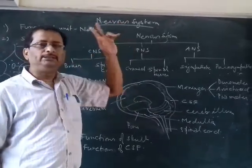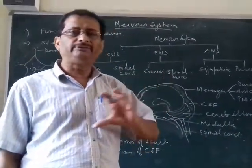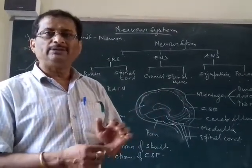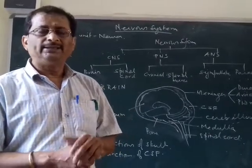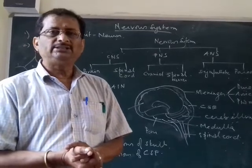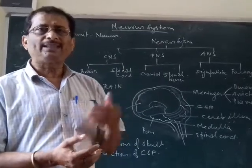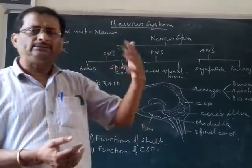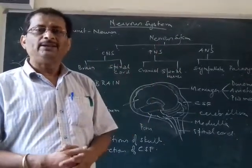First of all, you have to know that in the human body, there are two systems which coordinate the action of the various organs and the various systems in the body. One of them is the Nervous System, the second one is the Endocrine System. In the Nervous System, the actions are very quick, responses are also very quick, and the transmission is very fast.